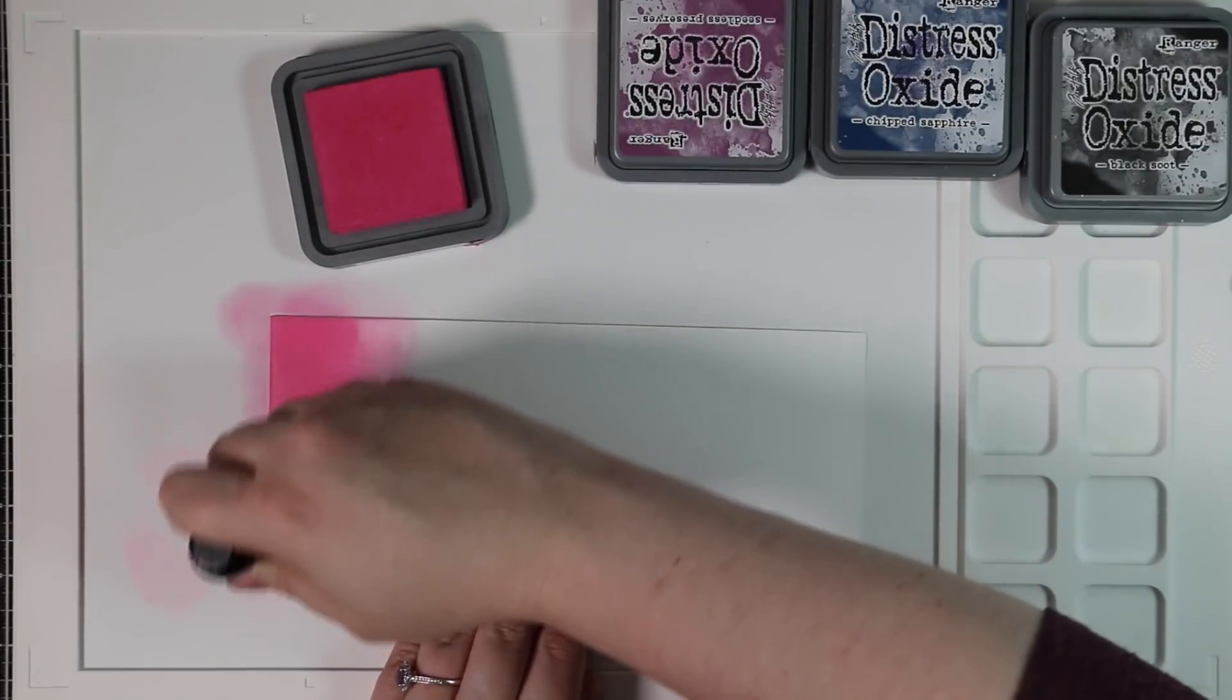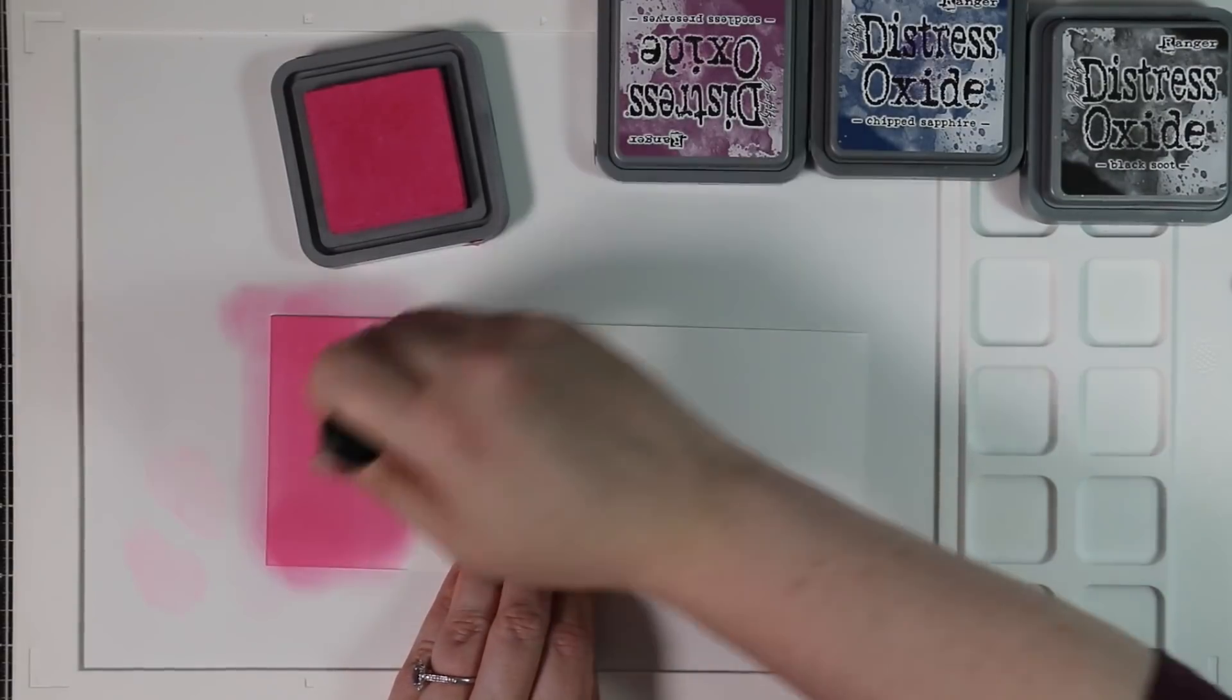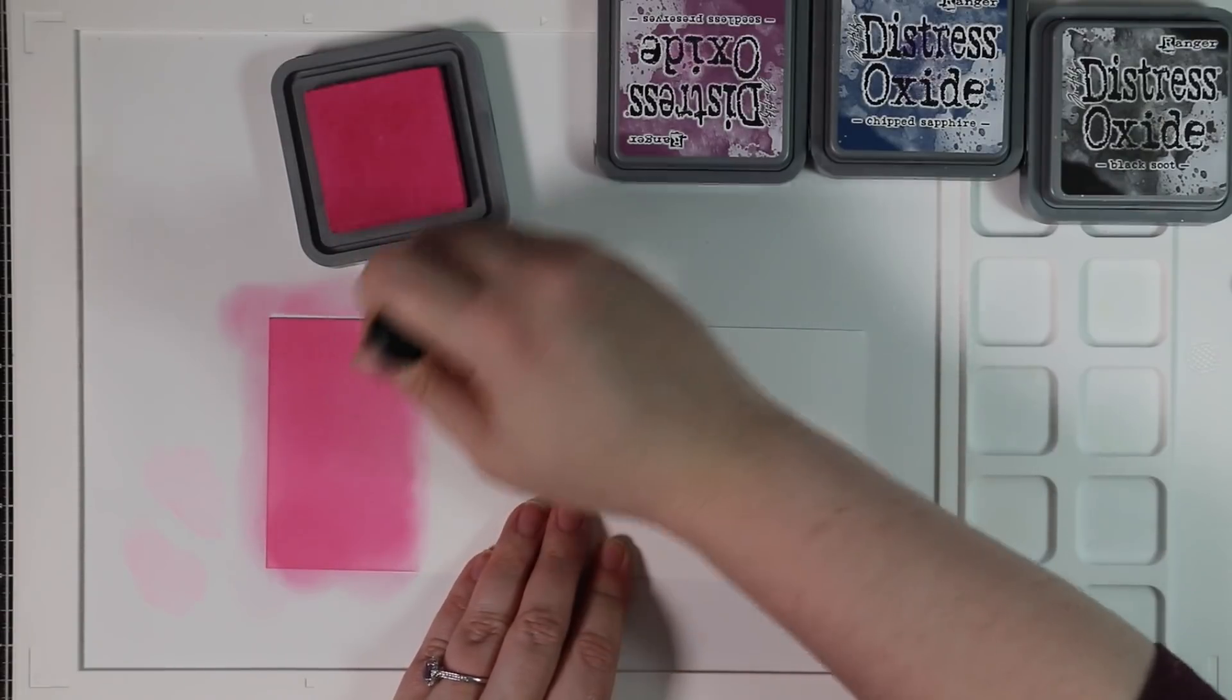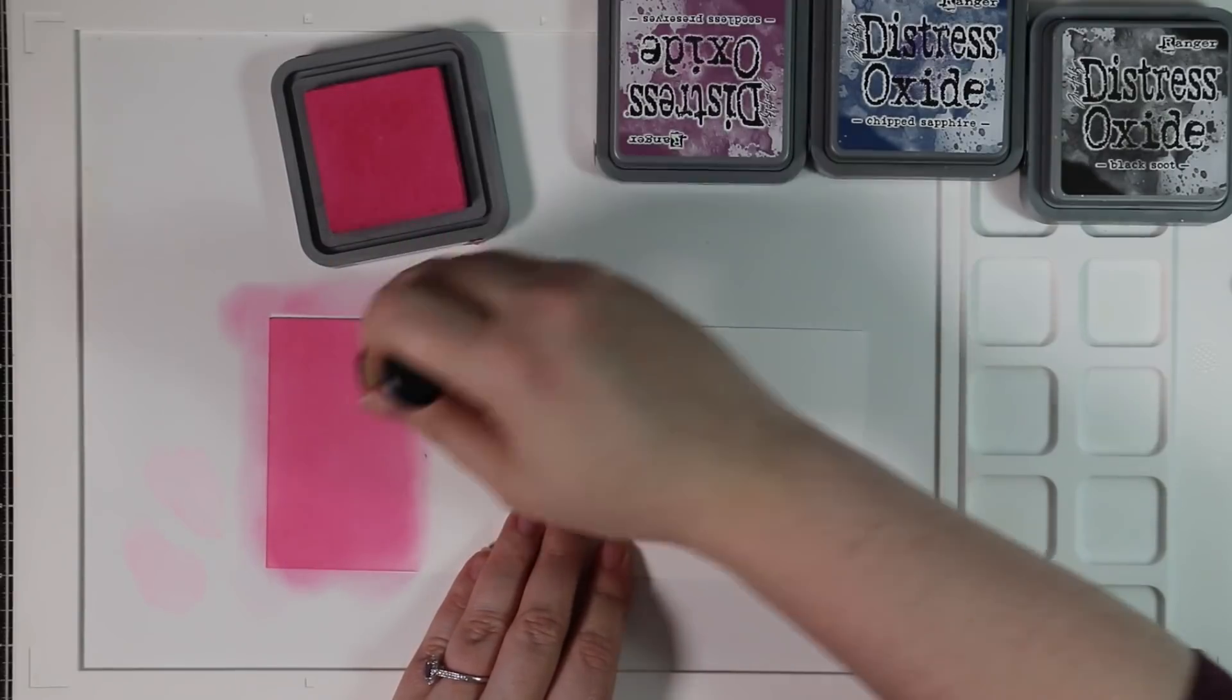I highly recommend if you haven't tried blending inks onto Simon's 120 pound white cardstock, highly recommend trying it out, especially Oxide inks. This combo for me is just perfect.